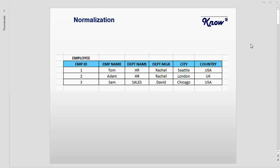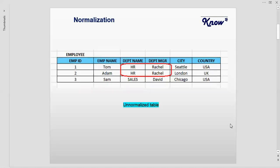The aim of normalization is to reduce redundant or repeating data. If we take a closer look at this table, we'll be able to identify that there is some repeating data in this table.